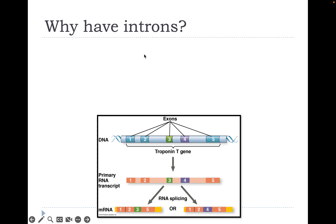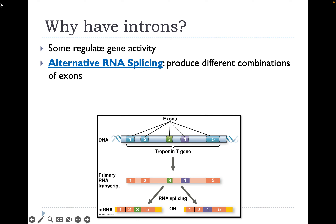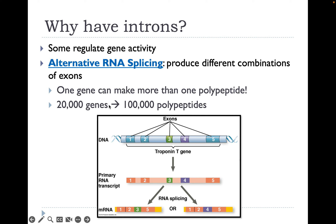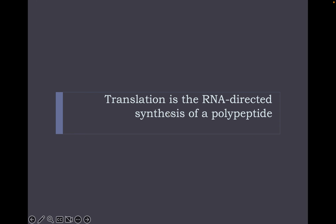Why have introns if we just cut them out? Some introns regulate gene activity. Also, there can be more than one way that pre-mRNA is spliced, producing different combinations of exons and different polypeptides — so one gene can make more than one polypeptide. This is incredibly cool: our DNA can code for exponentially more traits, proteins, and RNAs than we ever thought. With about 20,000 genes, we could produce almost 100,000 different polypeptides.